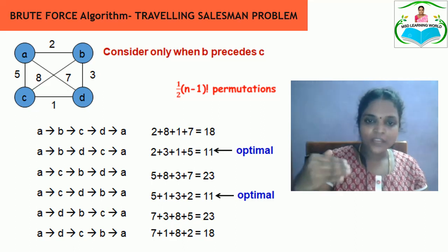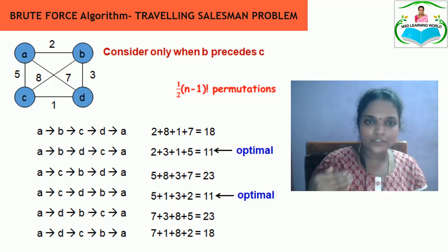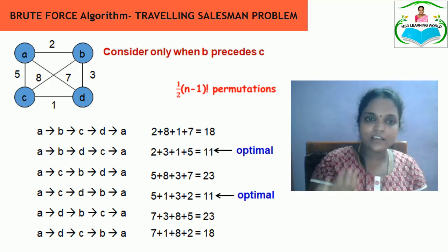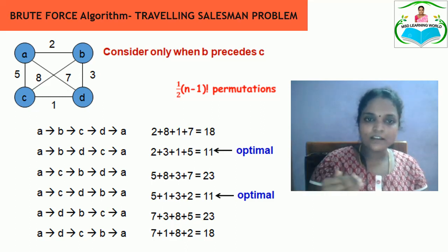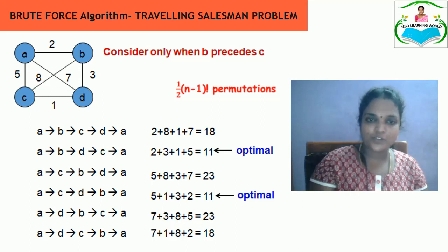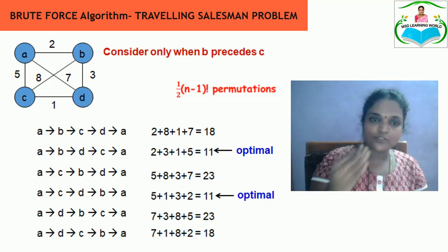The minimum distance is 11, and another route also has the same distance of 11. So you can select any one optimal path — either A→B→D→C→A or A→C→D→B→A. The time complexity for this is finding all possible permutations of routes from source to destination, which is (n−1)! permutations.